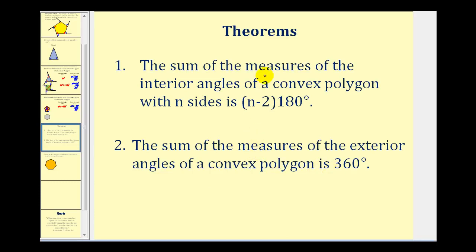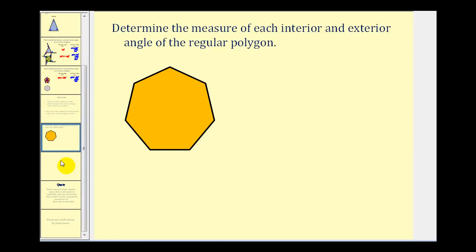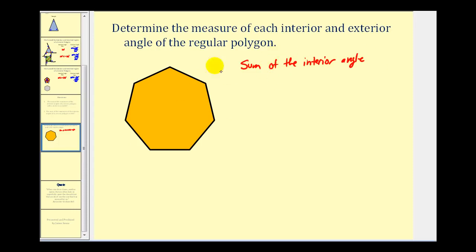Let's take a look at an example. Here we want to determine the measure of each interior and exterior angle of a regular polygon. Remember, if it's regular, the lengths of all the sides and the measures of all the interior angles are equal. Counting the sides: one, two, three, four, five, six, seven — so it's a heptagon, and n equals seven. Using our formula, we have seven minus two times 180 degrees, which gives us five times 180, or 900 degrees.